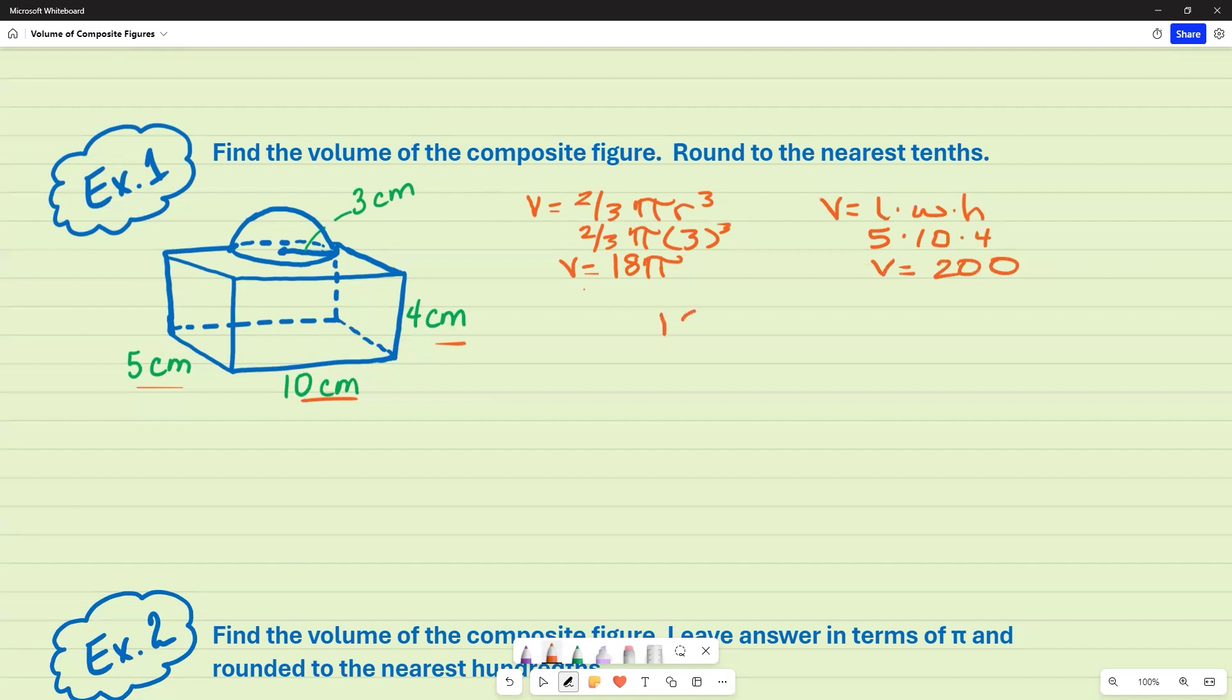But since it's a composite figure, what I want to do is I want to add both of those together. So in your calculator, go ahead and add 18 pi plus 200. But based off of the directions, we want to round it to the nearest tenths. And that's going to be 256.5. And our units will be cubic centimeters. This is the final answer.